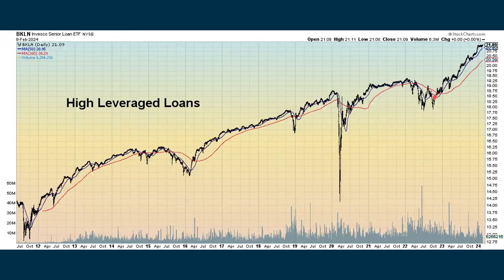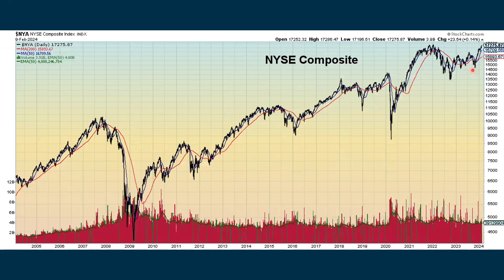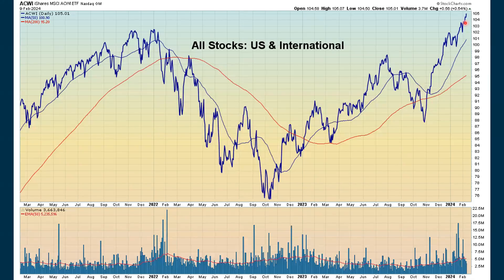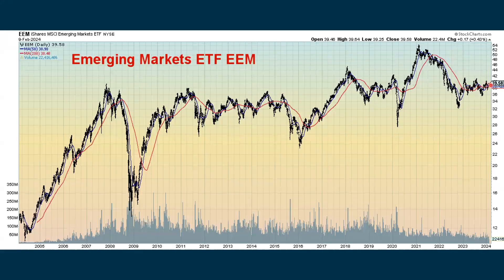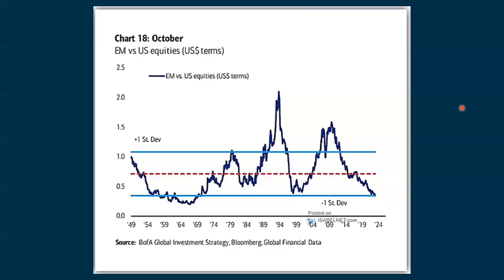High leverage loans — these are very risky loans — continue to go up and are setting new all-time highs with this ETF. The NYSE composite, used for a broad market measure, is also in an uptrend but not quite back to previous all-time highs. Looking at emerging markets compared to US stocks, we're seeing the ratio really coming down — which sometimes marks some kind of a bottom where folks say emerging market stocks are now looking attractive enough to buy. But it could still drop lower. We are seeing some inflows into emerging markets.